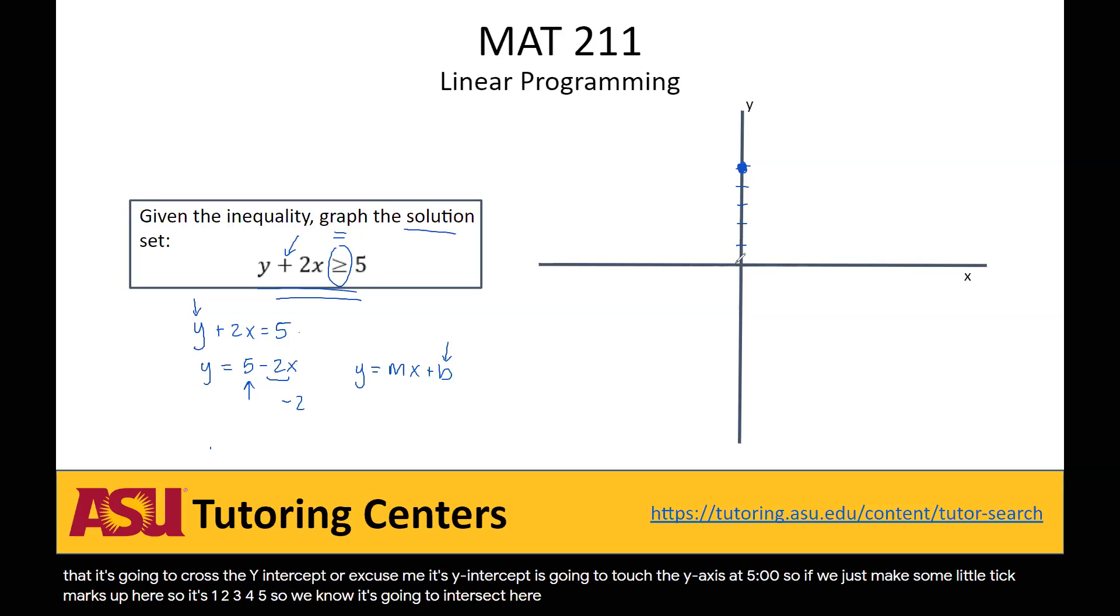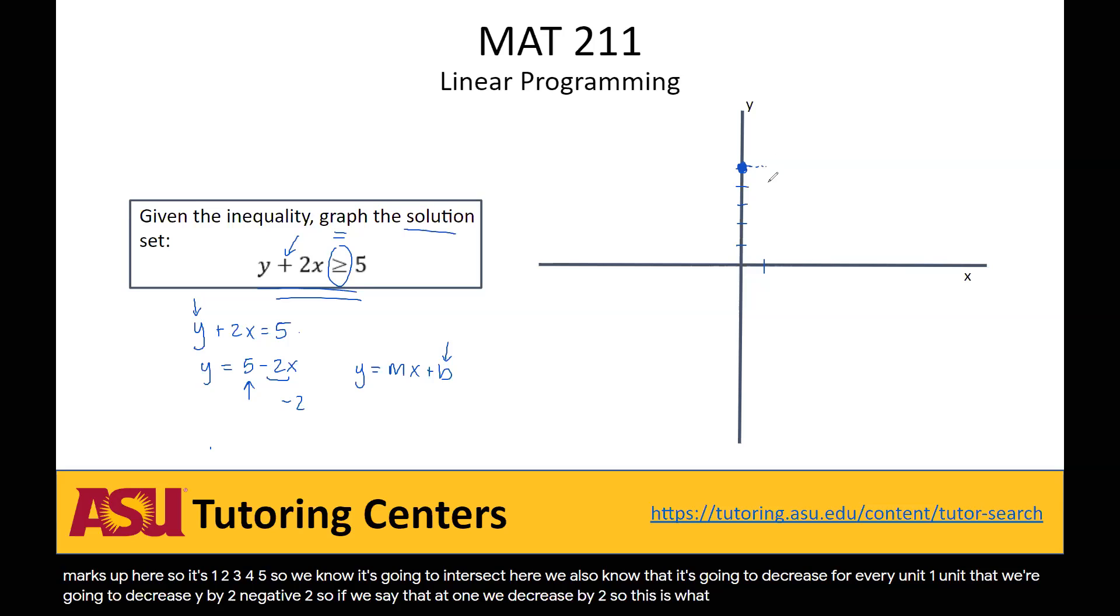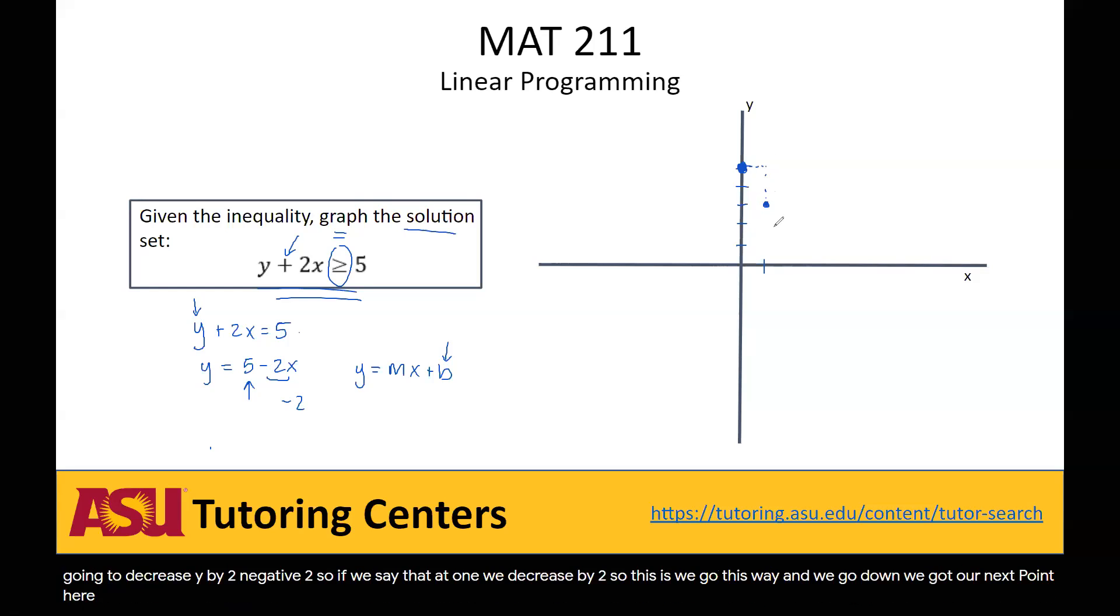We also know that it's going to decrease for every unit, one unit that x increases, we're going to decrease y by negative 2. So if we say that at 1, we decrease by 2. We go this way, and we go down, and we got our next point here. We could do it once more just to get a nice connected line. We go 1 over more, and we go down another 2.